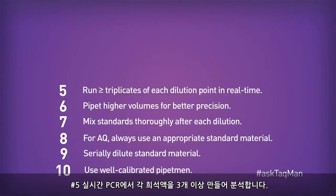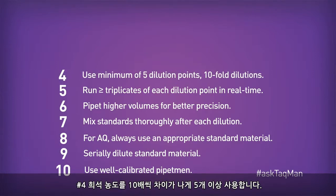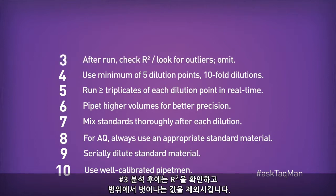Number 5: run at least triplicates of each dilution point in real-time. Number 4: use a minimum of 5 dilution points, each of which has at least a 10-fold dilution. Number 3: after the run, check your R-squared, look for outliers, and omit them.